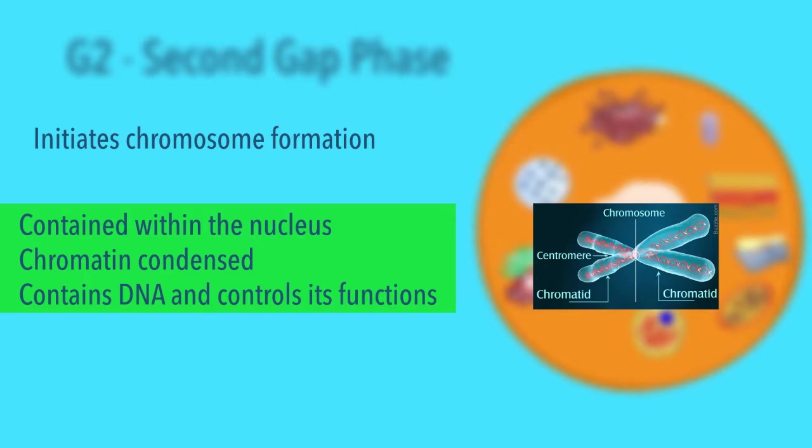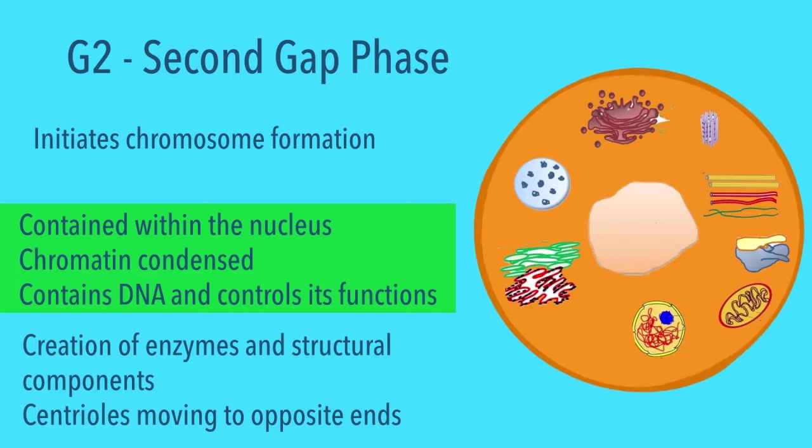The G2 phase also starts with the creation of enzymes and structural components, along with the centrioles moving to the opposite ends of each cell. The role of centrioles is that it helps in the formation of spindle fibers later on.